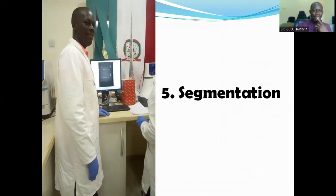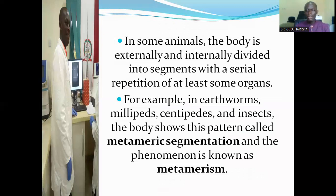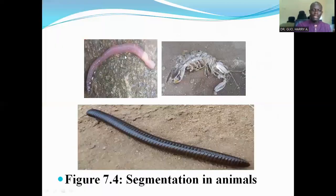Segmentation is another feature for classification. In some animals, the body is externally and internally divided into segments with serial repetition of at least some segments. For example, in earthworms, millipedes, centipedes, and insects, the body shows this pattern called metameric segmentation, and the phenomenon is known as metamerism. So the fact that an organism is segmented or not is also another feature for classification. These are pictures of segmented organisms like the earthworms, millipedes, and some other arthropods.